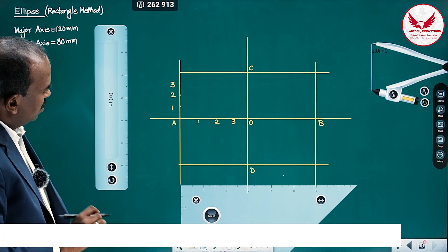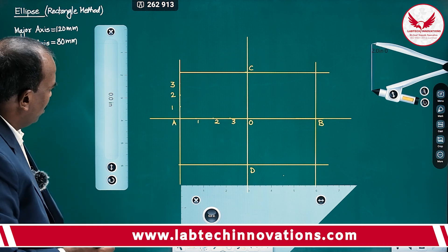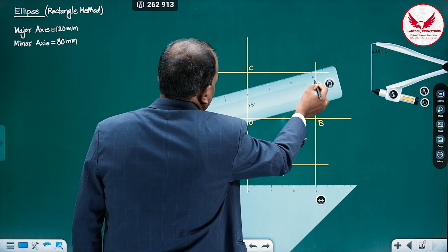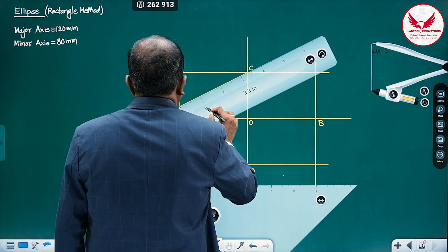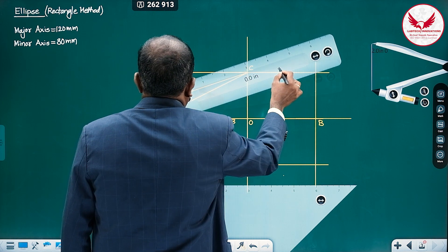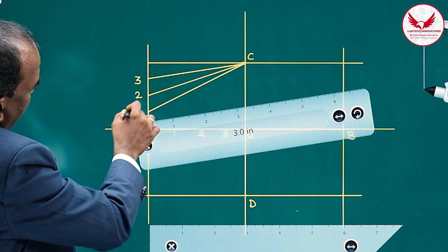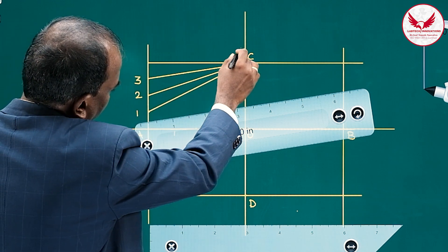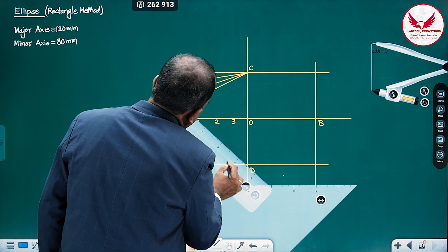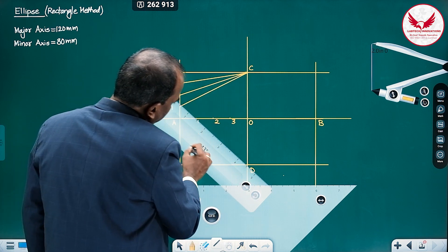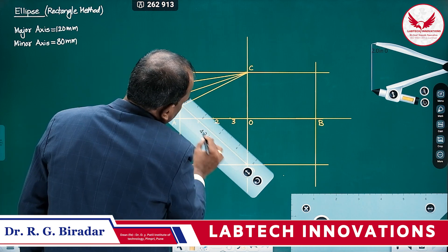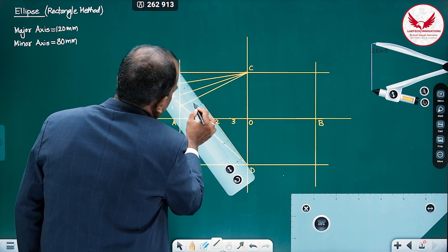In one quadrant, I will show how to get the points, and then you can extend that idea to the remaining quadrants. From point 1 on the vertical, join 1 to C. Then shift to point 2, join 2 to C. Then join 3 to C. In the same quadrant, we want points on vertical lines, so we join them to one end of the minor axis C. Through the same points on the horizontal, join D to 1, D to 2, and D to 3, and extend those lines.